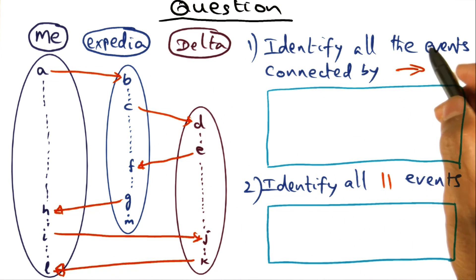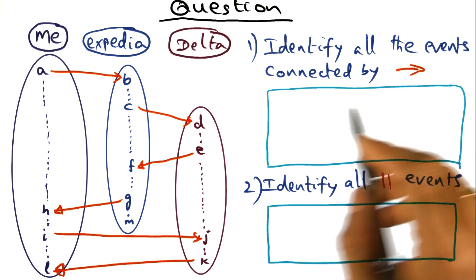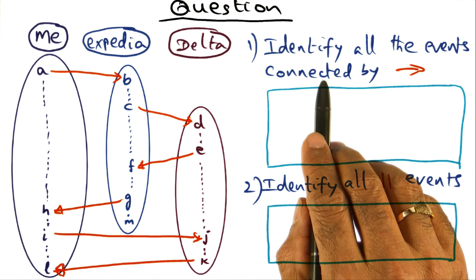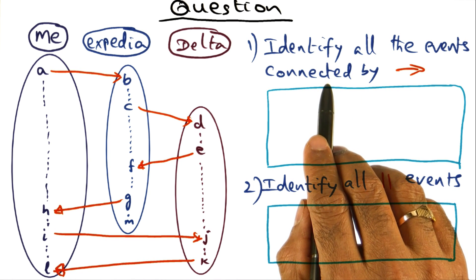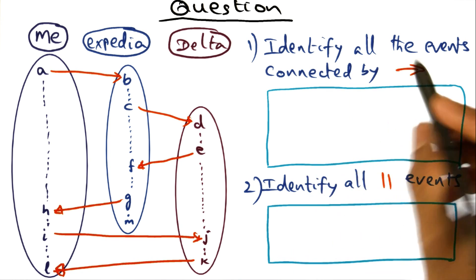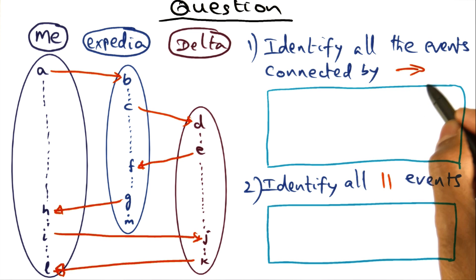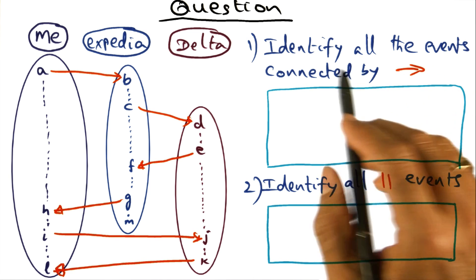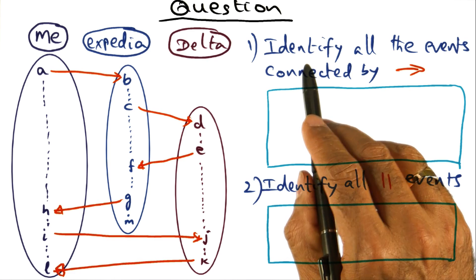The question I'm going to ask you—like I said, it's an open-ended question—is to identify all the events that are connected by the happened-before relationship. I told you that this is the notation I'm using for the happened-before relationship.